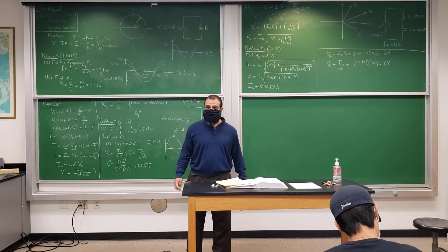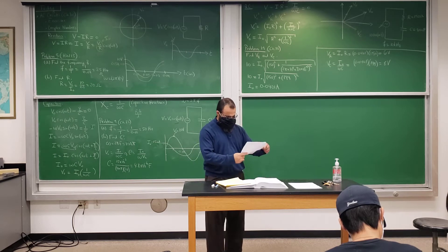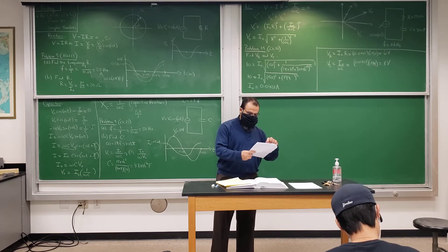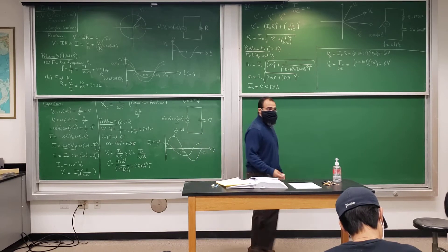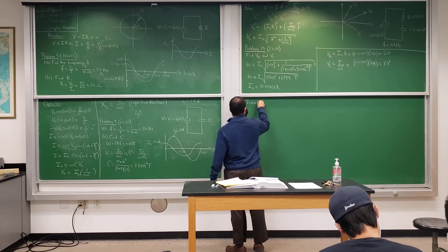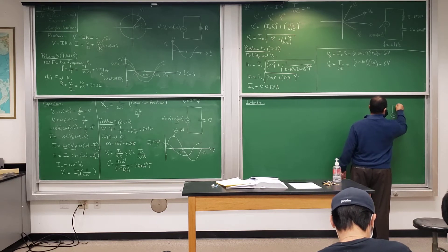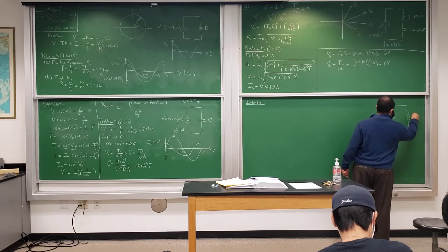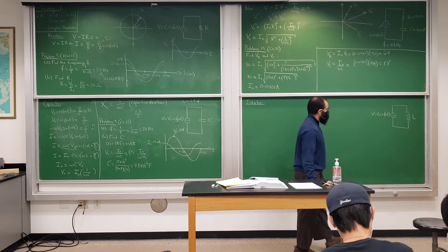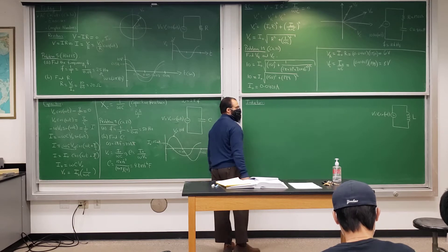Ready for inductors? So let's do the inductor. An inductor connected to an AC source — the voltage is always V = V0 cosine omega t. Using the loop rule for the inductor, we get: voltage from the source minus L times di/dt equals zero.